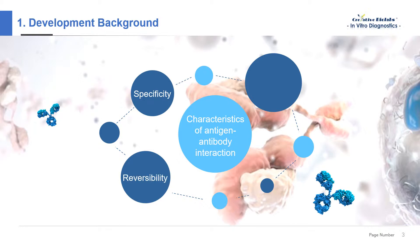Second, reversibility: the reaction between antigen and antibody is a process of dynamic equilibrium. Under certain conditions, the antigen-antibody complex can dissociate while the antigen and antibody return to a free state. Finally, proportionality: the reaction between antigen and antibody follows a certain quantitative relationship. When the ratio of antigen to antibody is appropriate, the peak portion of the curve appears. Before and after the equivalence band are the excess antibody bands and the excess antigen bands. Therefore, only grasping these characteristics, we can develop antibodies with high sensitivity and high specificity.